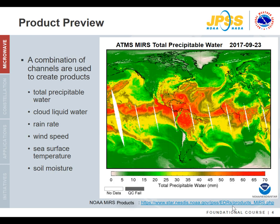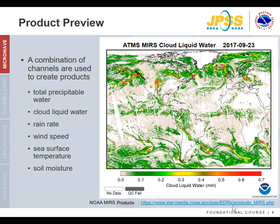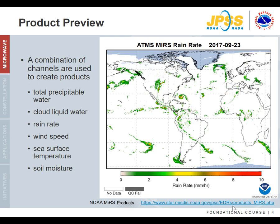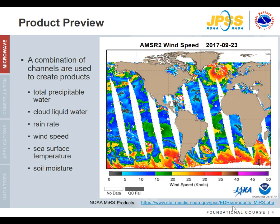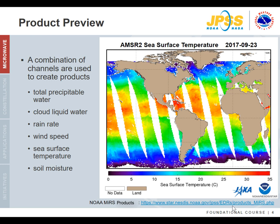One of the benefits of microwave imagery is the unique products that are produced: total precipitable water, cloud liquid water, rain rate, sea surface wind speed, and sea surface temperature and soil moisture information, all incorporated into analysis and modeling activities. This module gives an introduction as to how this is possible.